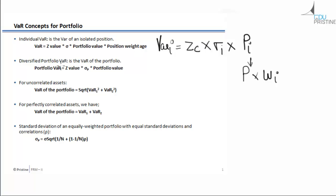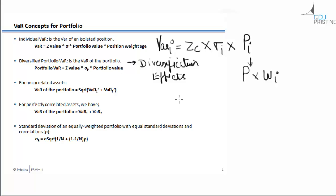Now let us talk about Diversified Portfolio VaR. Diversified Portfolio VaR is the VaR of the entire portfolio. It is called diversified because it takes into account all the diversification effects. Diversified Portfolio VaR is calculated as: VaR of the portfolio equals ZC into the standard deviation of the portfolio into the portfolio value, as given in the formula.